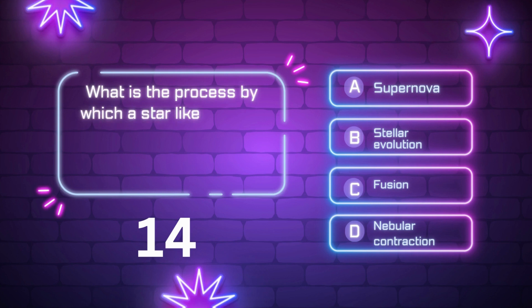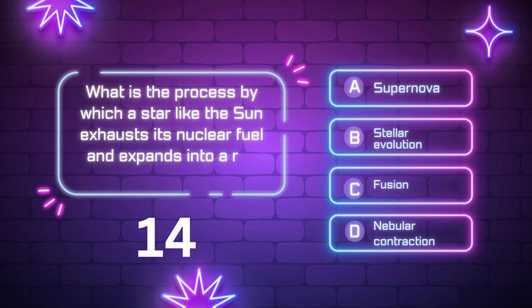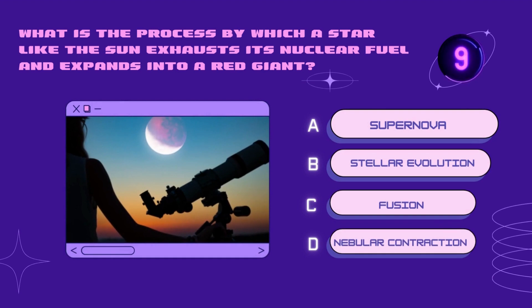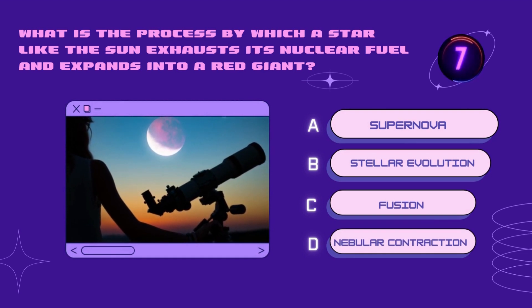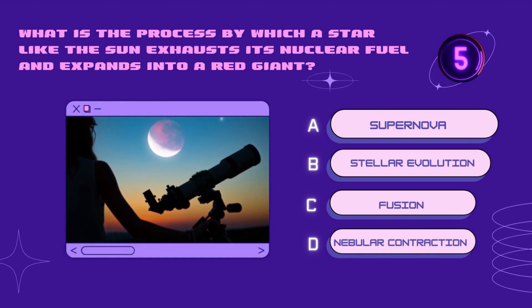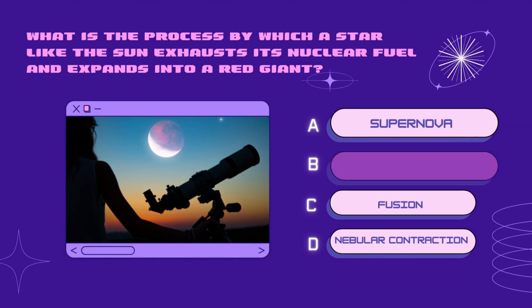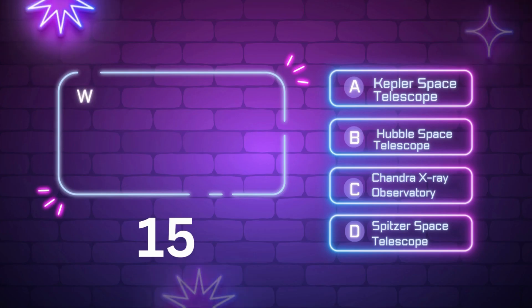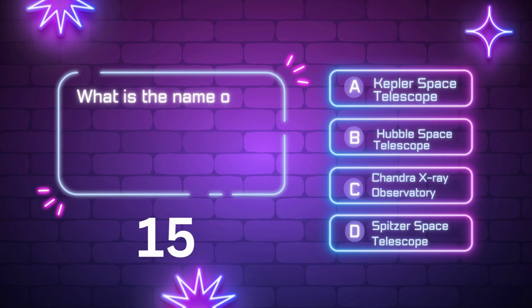What is the process by which a star like the sun exhausts its nuclear fuel and expands into a red giant? Supernova, fusion, nebular contraction, stellar evolution. Your time starts now. Right answer is stellar evolution.